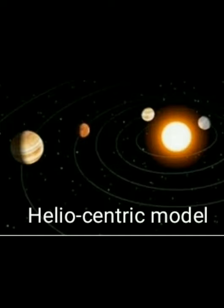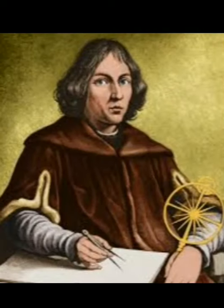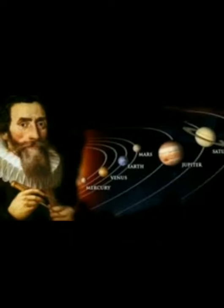This is the heliocentric model — the sun is at the center and planets are orbiting around the sun. This is also known as the heliocentric model. Nicholas Copernicus proposed this model, and Johannes Kepler also supported the heliocentric model.